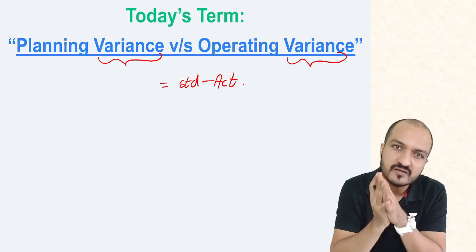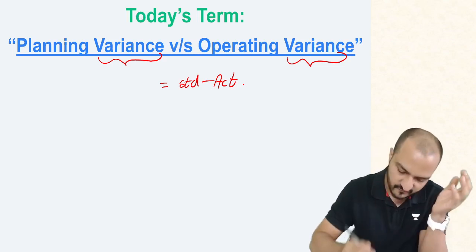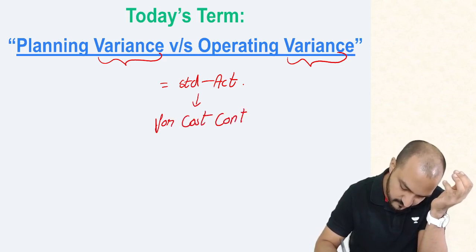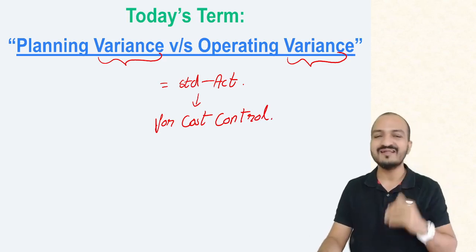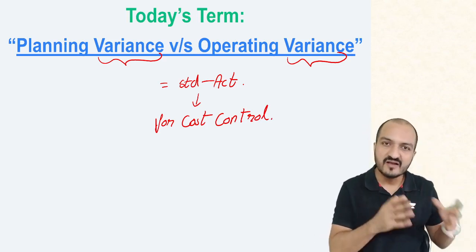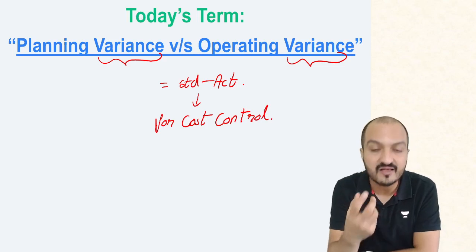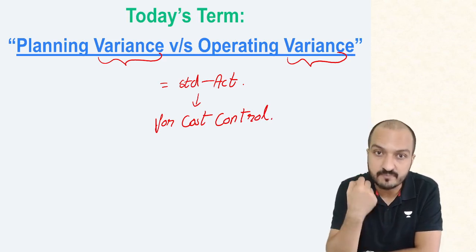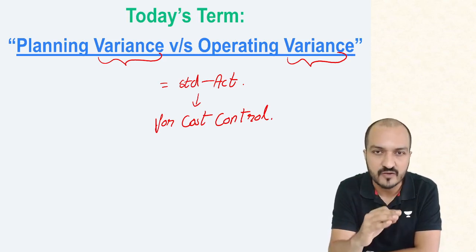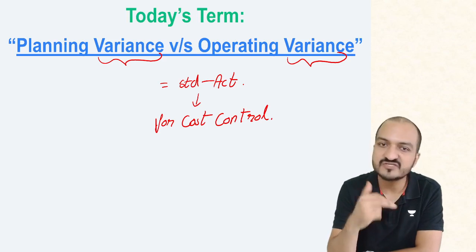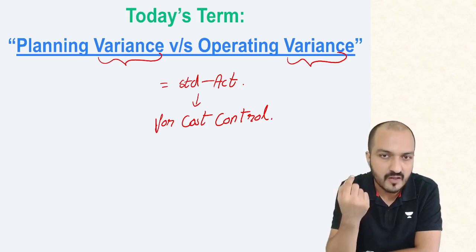Why do you calculate variance? You calculate variance for the purpose of cost control. It indicates your mistakes, and next year you try to control those mistakes. So the purpose of calculating any variance is to identify mistakes and control them in the following year.